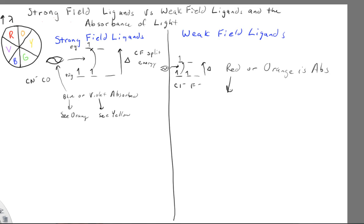So if red was absorbed, a smaller jump that requires a photon of less energy or a longer wavelength, you would see green. And if it was orange, you would see blue.